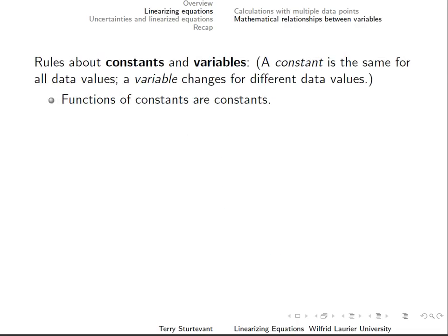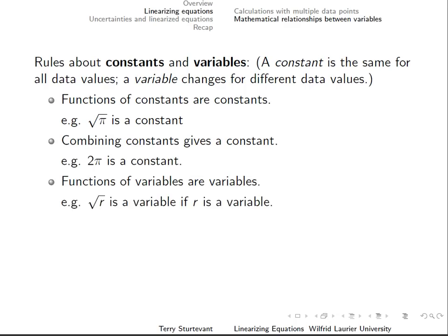There are two kinds of quantities in any equation: constants and variables. A variable is a number that is different for each data point. Combining constants gives new constants. Combining variables gives new variables. Combining constants and variables gives new variables.